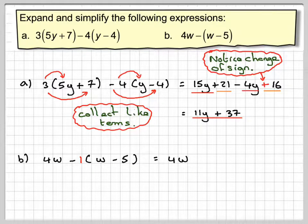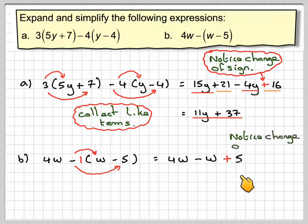We write down the 4w and then we need to do minus 1 times w which gives me minus w. We wouldn't normally write in the 1. And then minus 1 times minus 5 which makes plus 5.